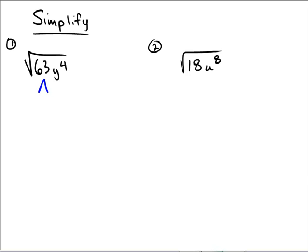What numbers do you know that multiply together to be 63? Let's say 9 and 7. So we've broken down 63 into 9 and 7. Then 9 breaks down further into 3 and 3. Now y to the fourth also breaks down — it becomes four y's.